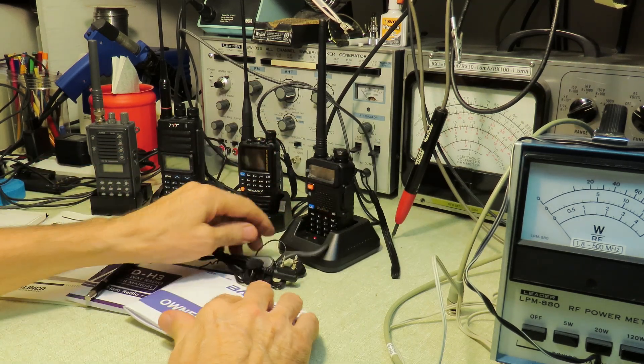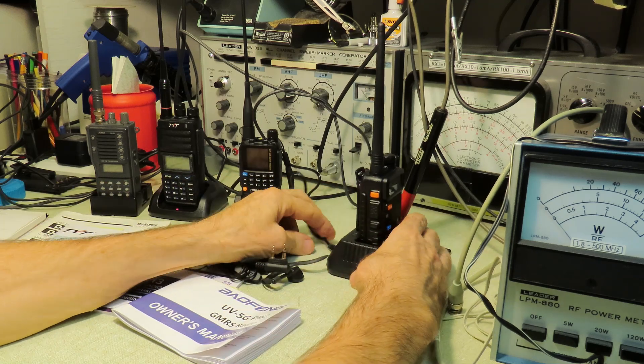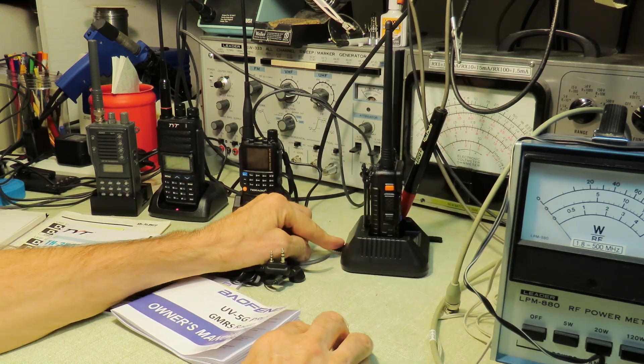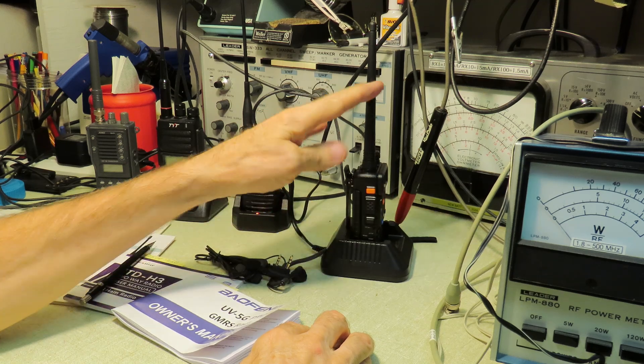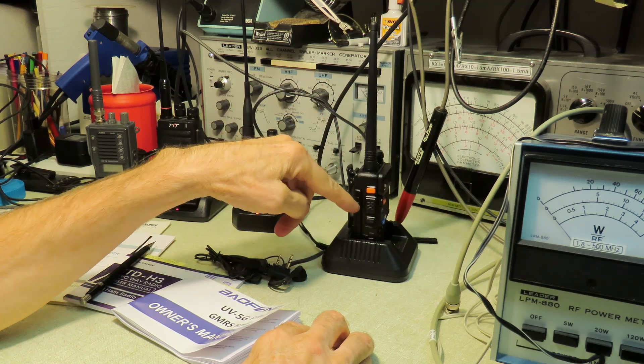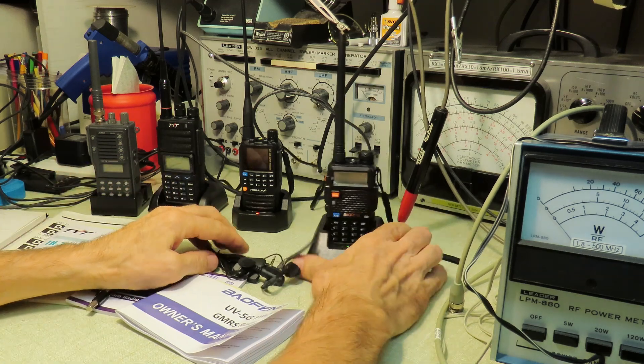The radio comes with a charging stand, which is strictly AC-operated. You have to have AC available to plug this thing in. It comes with the antenna, it comes with a belt clip, it comes with an 1800 milliamp hour battery.